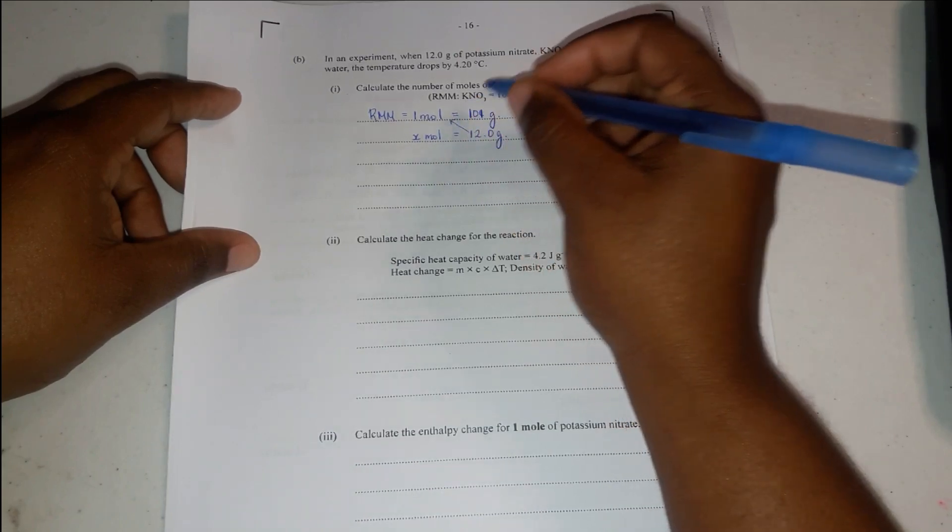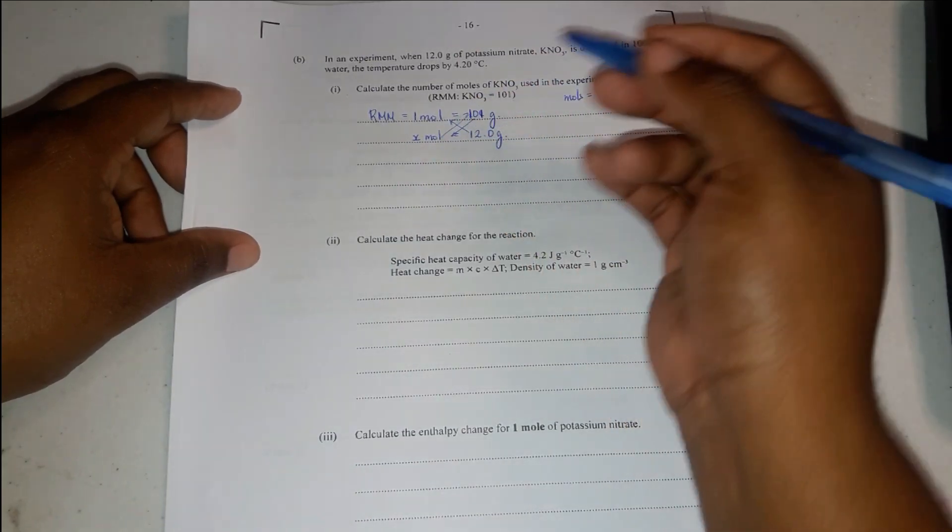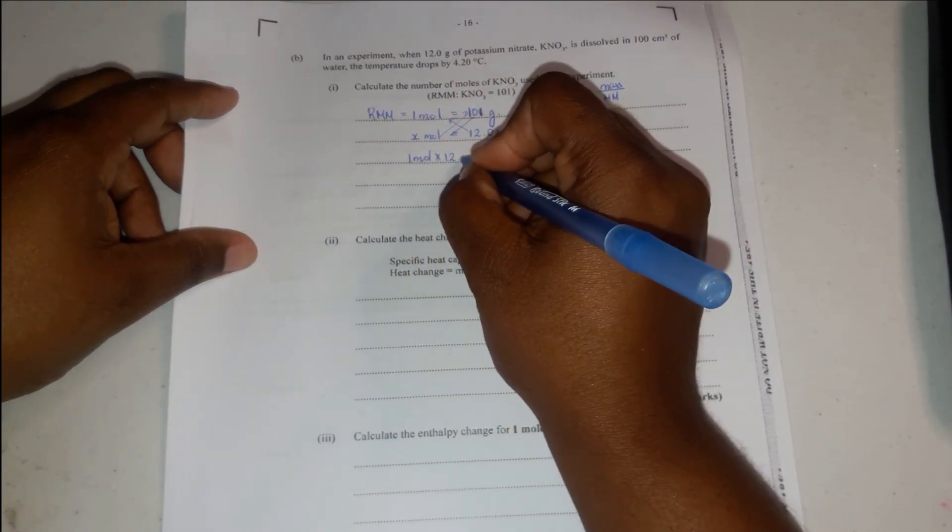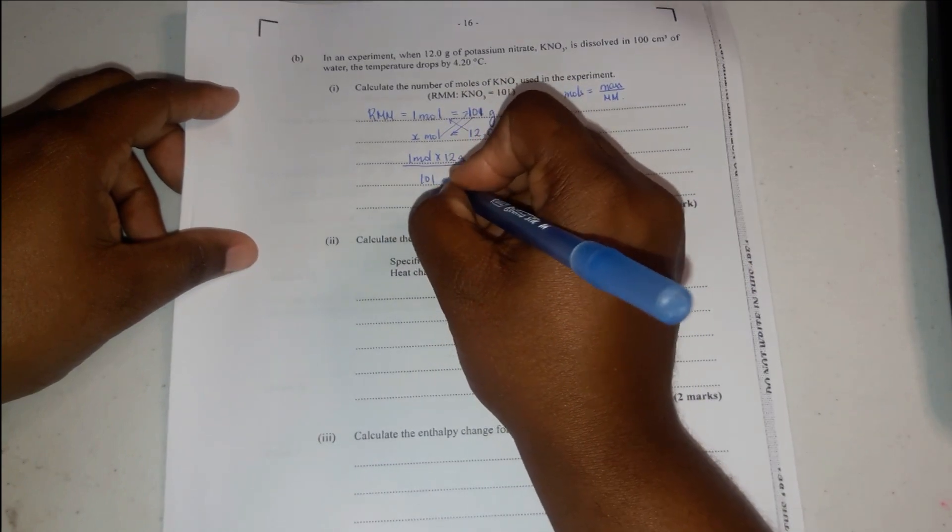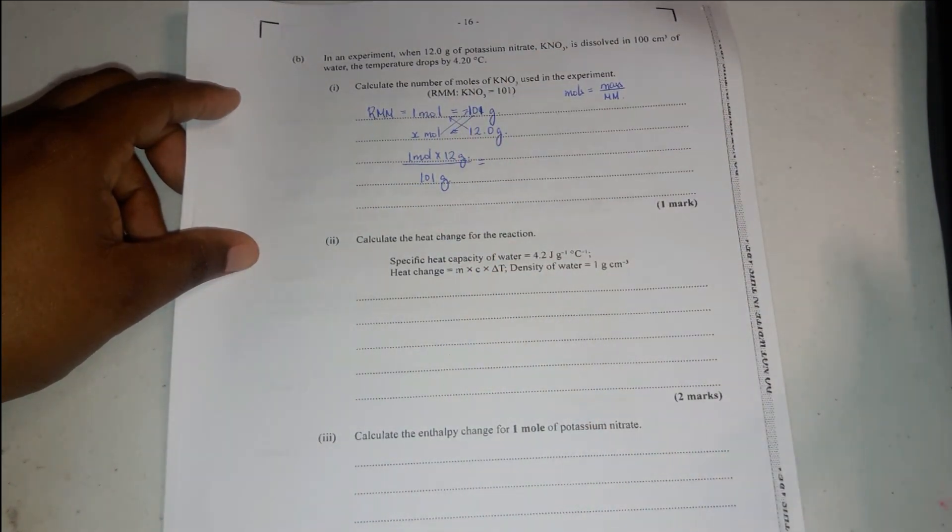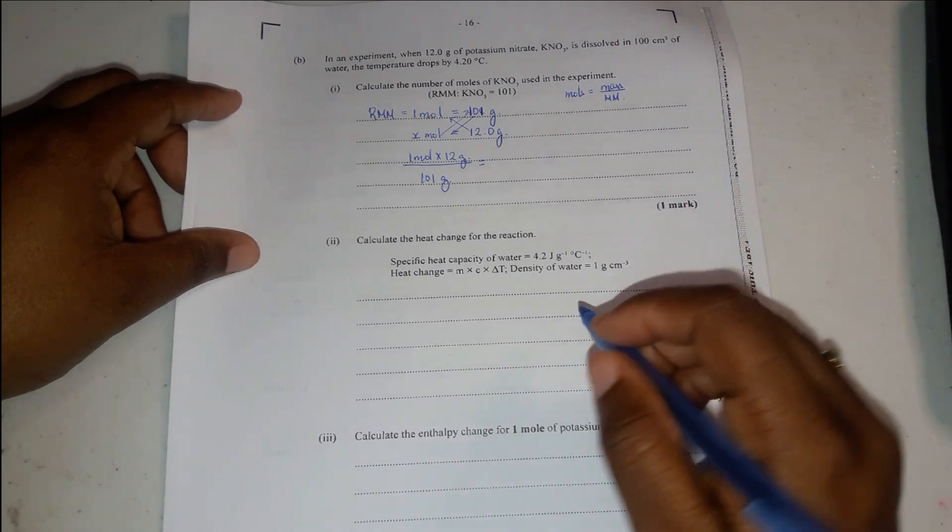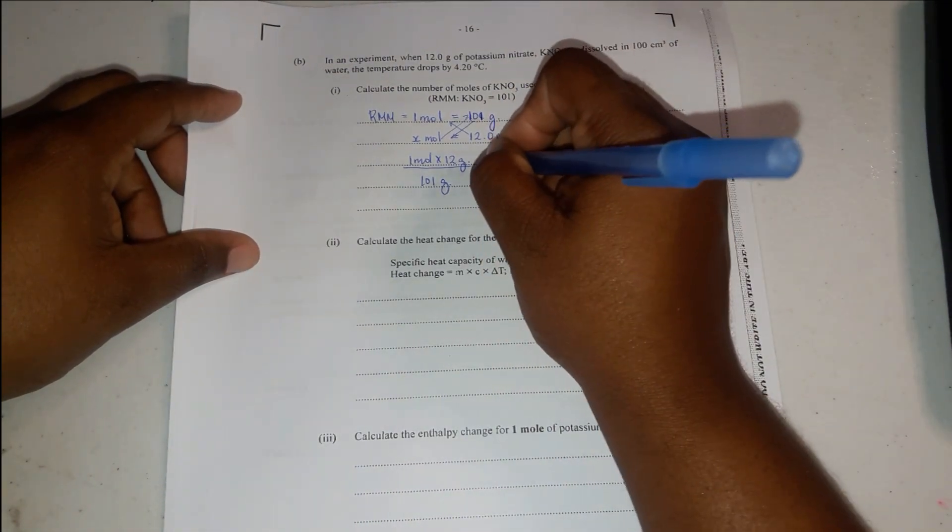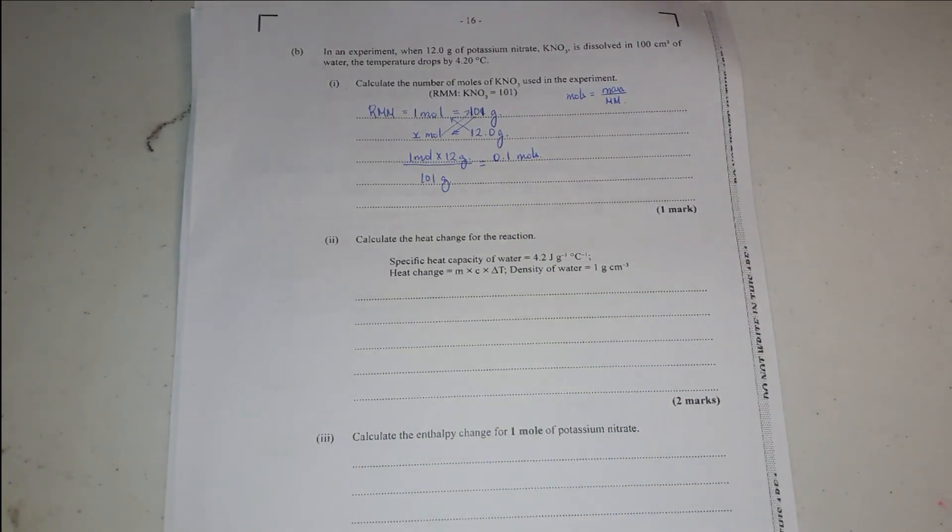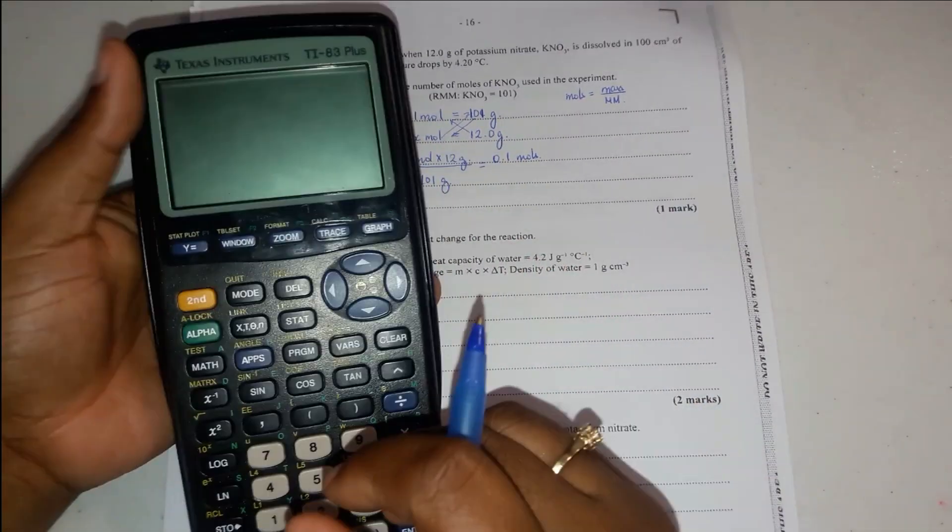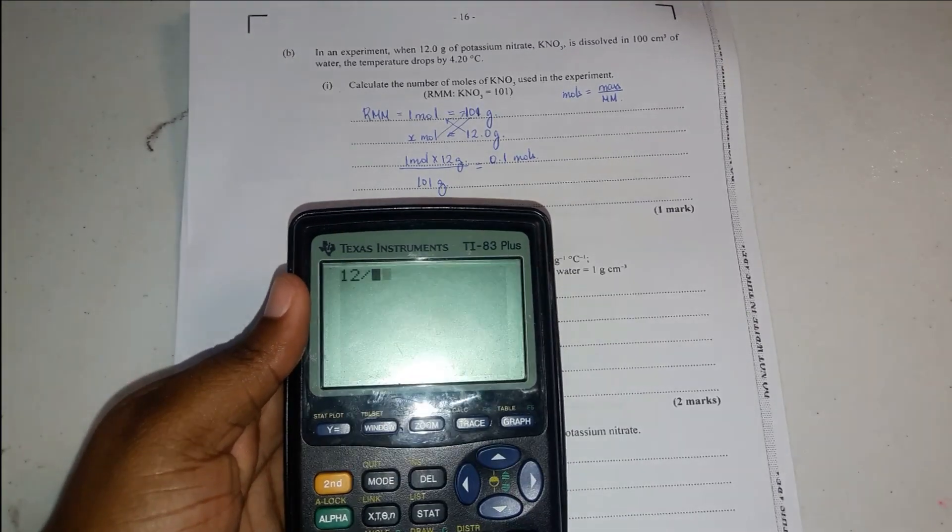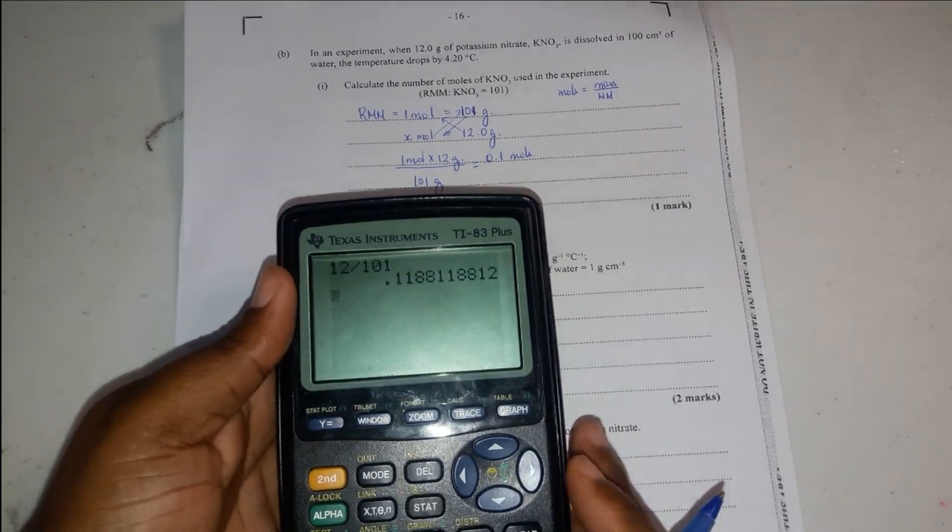If you want to cross multiply, carry the X up, bring 101 down, and you'll be left with 1 mole times 12 grams over 101 grams. Of course, it will be less amount of moles. And then we'll just do the calculation. The calculation should give you 0.1 moles. Here it is. 12 divided by 101 is 0.1 moles.